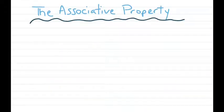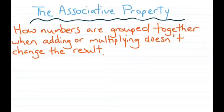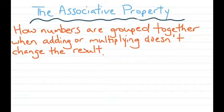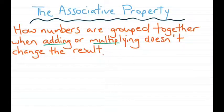Next up we're going to talk about the associative property. The associative property focuses on grouping. How numbers are grouped together when you're adding or multiplying doesn't change the result. In mathematics, the main thing we use for grouping are parentheses — that's the P in PEMDAS. And again, this works with adding and multiplying only, not division or subtraction.